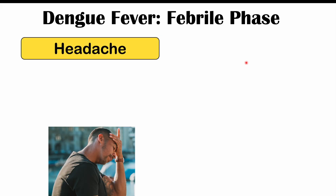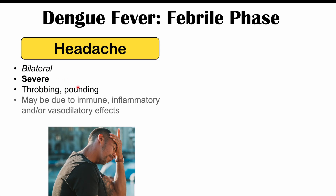Other symptoms include a headache that is going to occur bilaterally — on both sides of the head. It's often very severe, described as a throbbing, pounding headache, and it may be due to immune, inflammatory, and/or vasodilatory effects. So entering into the febrile phase, you're going to have a sudden onset of a high fever, retroorbital pain, and a severe headache.